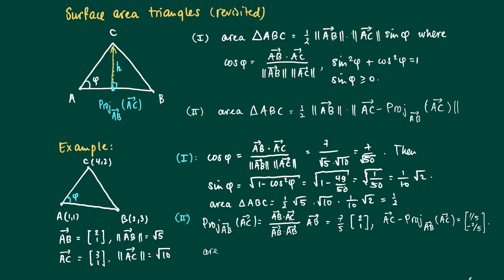We use this in the area formula, so the area of triangle ABC is one half times the base length of AB, which is the square root of 5, times the length of the vector (1/5, -2/5), which equals one half times the square root of 5 times the square root of 5, divided by 5, which again equals one half.